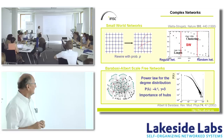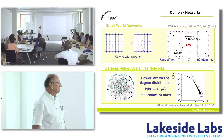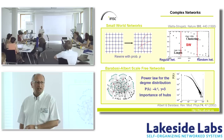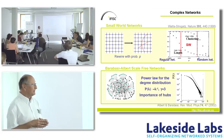The idea of scale-free networks: these are networks in which the probability for a node to have k links follows a power law. That means you have nodes with many different numbers of links — in particular some nodes with a very large number of links — those play the role of hubs, and this has some importance.